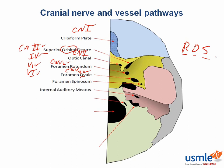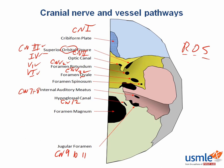The posterior cranial fossa structures pass through the temporal bone or the occipital bone. In the temporal bone we have the internal auditory meatus, where cranial nerves seven and eight pass through. The jugular foramen is at the border of the temporal and occipital bones, and cranial nerves nine, ten, and eleven pass through here. The hypoglossal canal is a small hole in the occipital bone through which cranial nerve twelve passes. Last but not least is the foramen magnum, which is the exit point for the brainstem, the vertebral arteries, and the spinal roots of cranial nerve eleven.